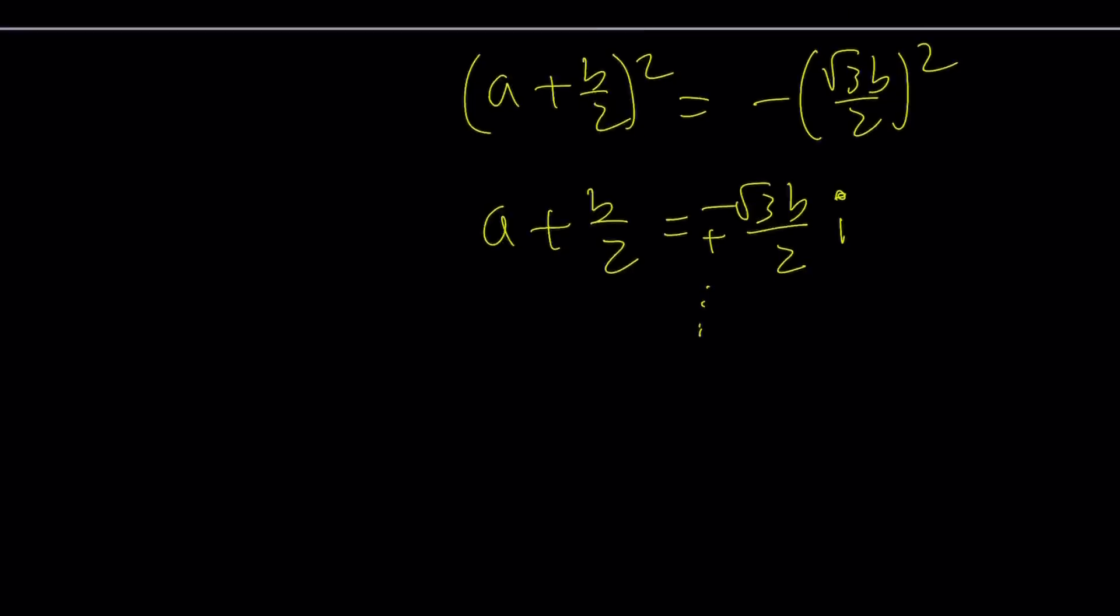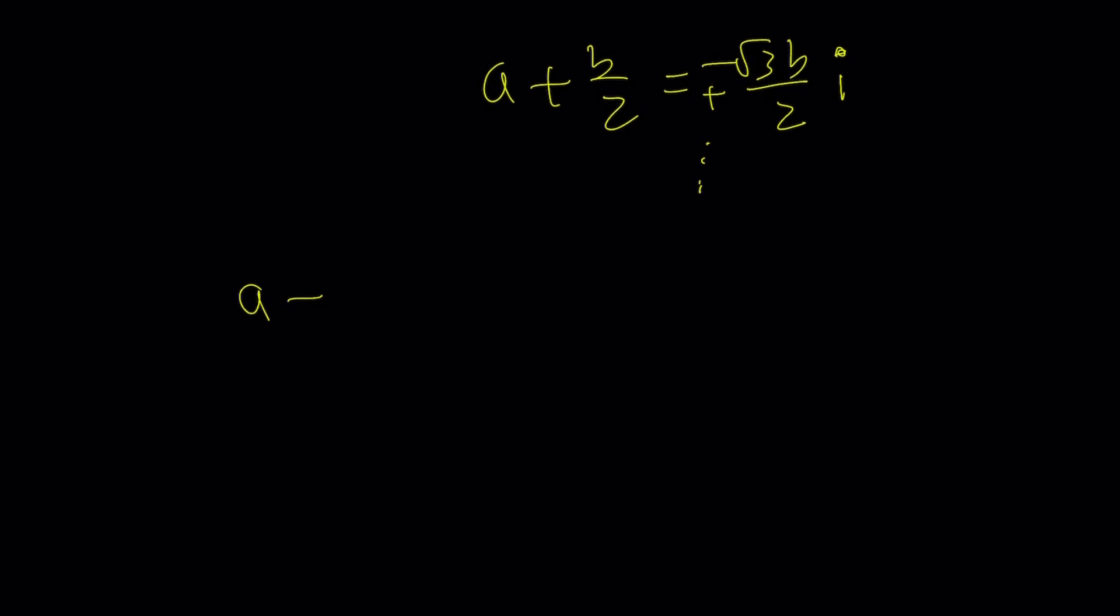So here's another way to approach this problem. We have a plus b to the fifth equals a to the fifth plus b to the fifth. We can kind of bring down one of these fifth powers and then factor this as a difference of two fifth powers. And then kind of you'll find a common factor, so on and so forth.